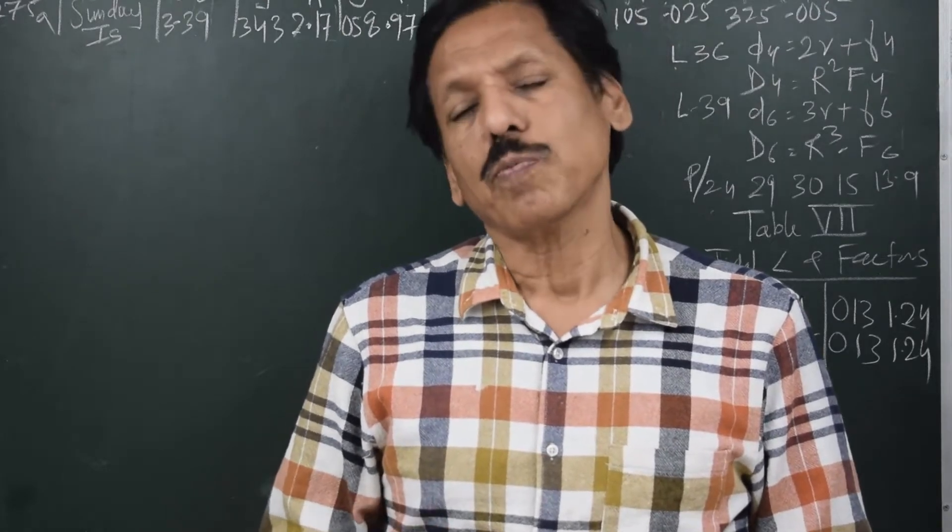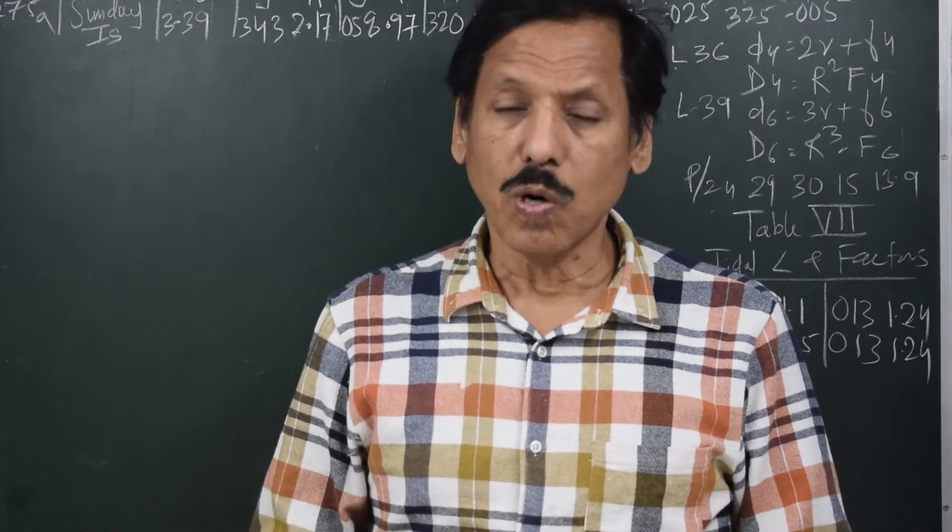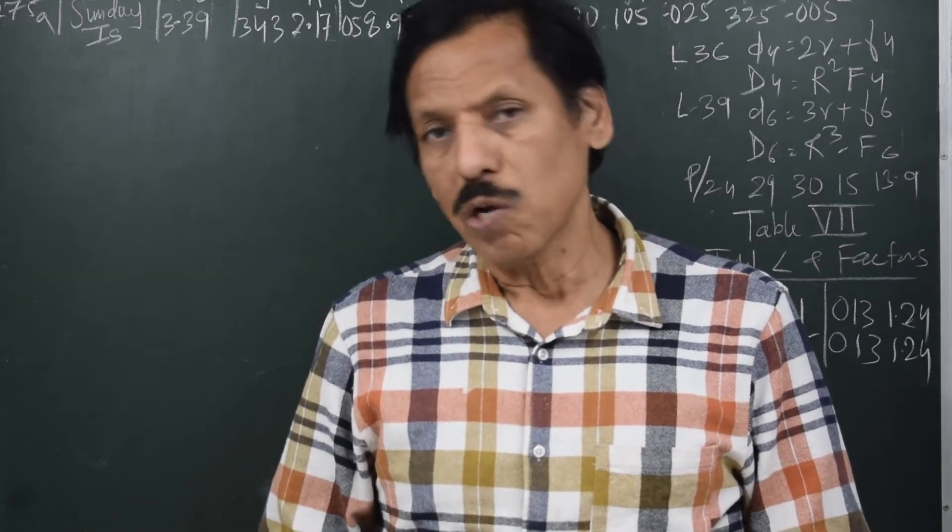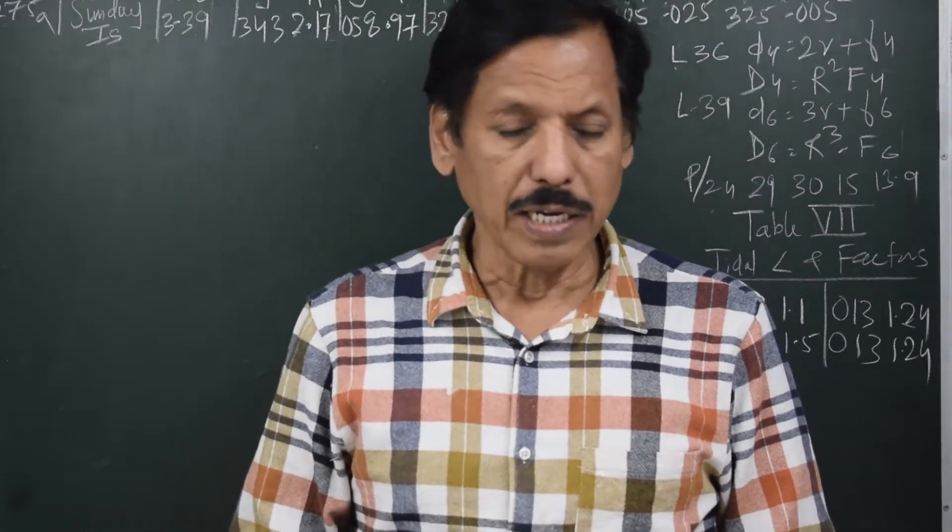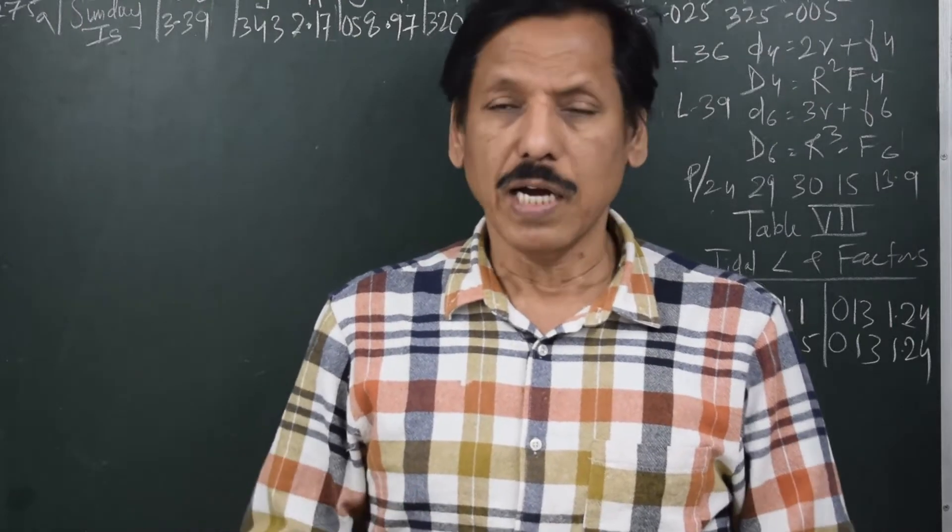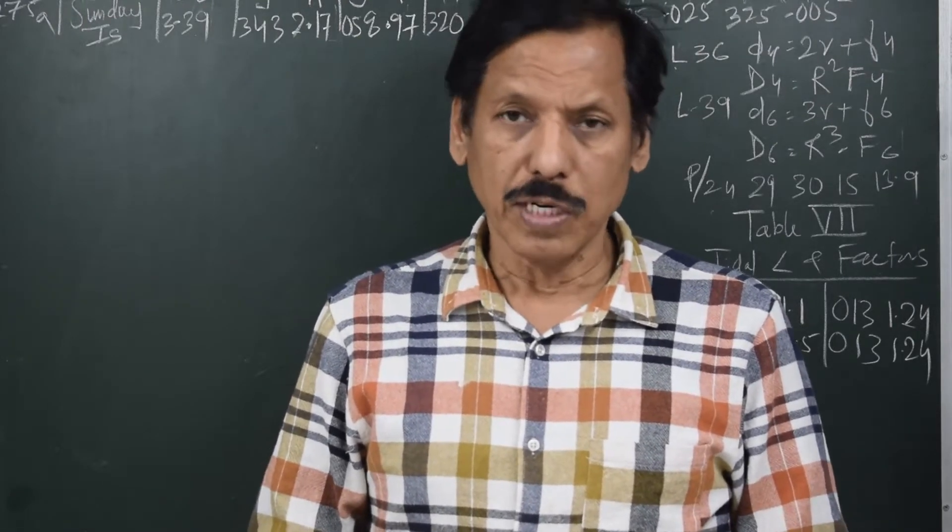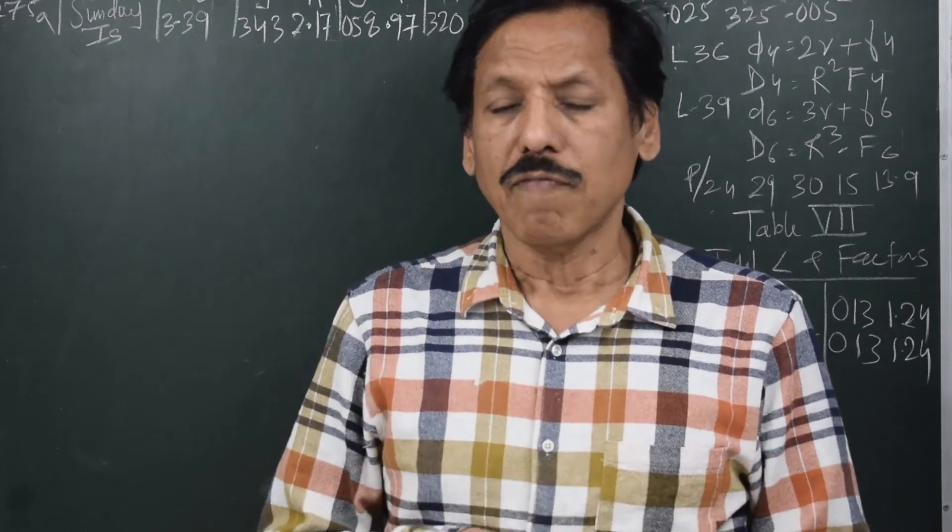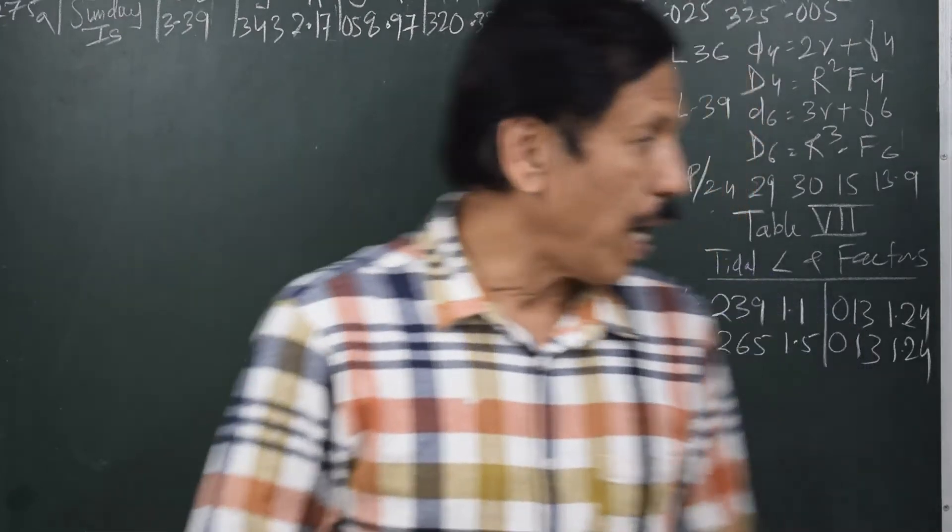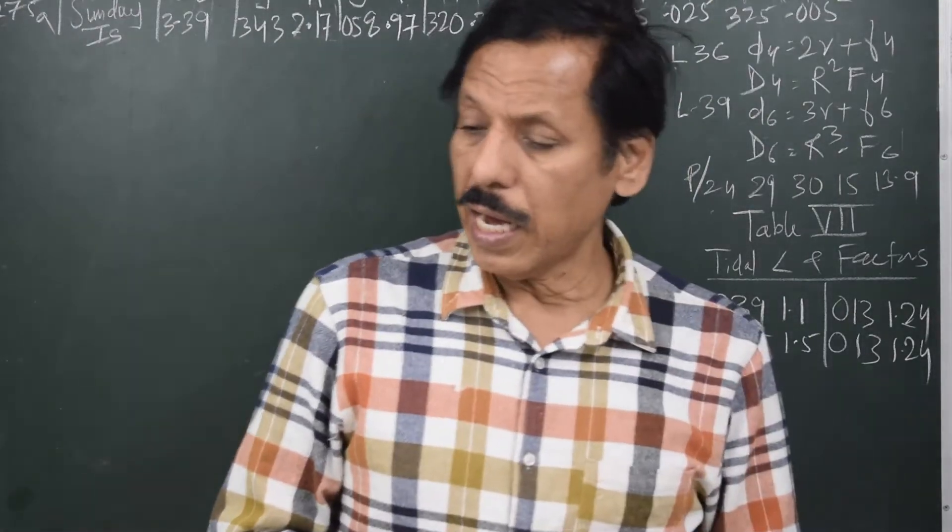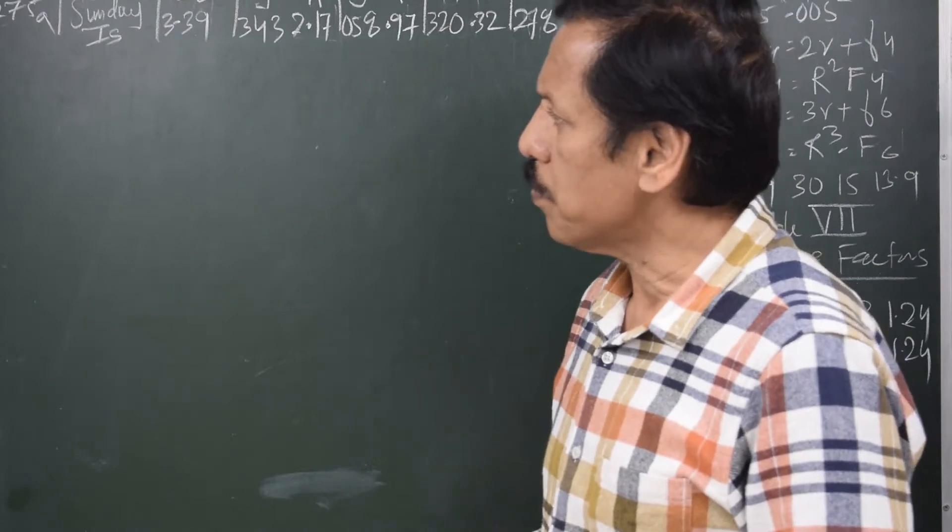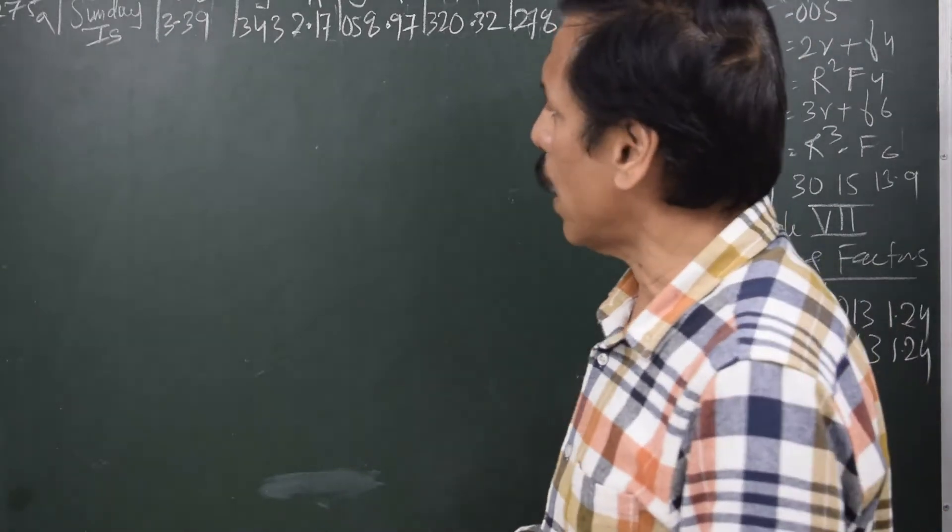At other times you might find large quarter diurnal, one-sixth diurnal, or shallow water corrections in the port, in which case you may be required to find out the height of tide by harmonic constant method. Let's say we are finding out the height of tide by harmonic constant method, and you are given the port as Sunday Island.